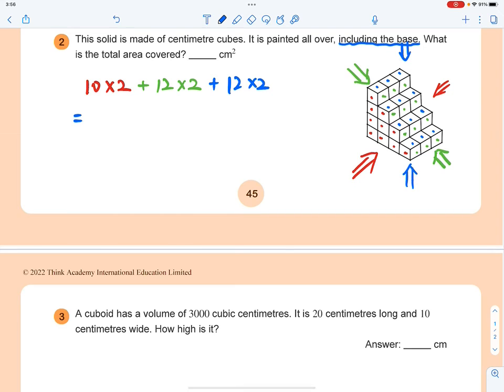And now you can get the answer, which is ten times by two, you got twenty. And plus twelve times by two, you got twenty-four. And then you plus twenty-four again. So add these three numbers, you're going to get sixty-eight. So the answer will be sixty-eight squared centimeters.